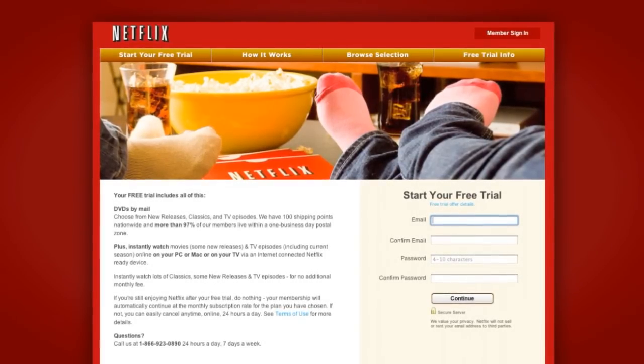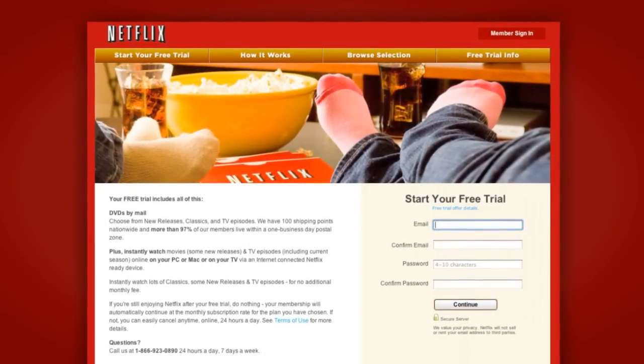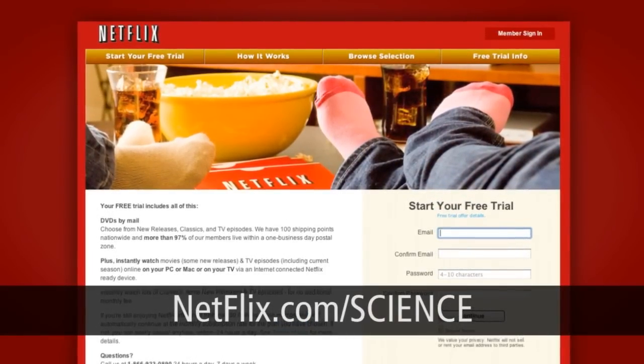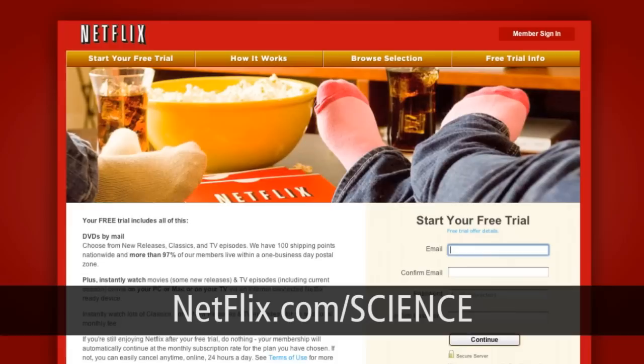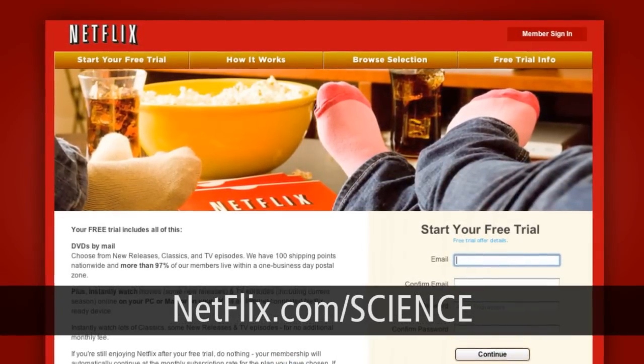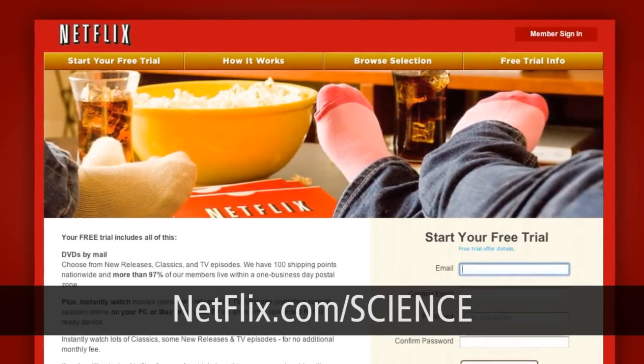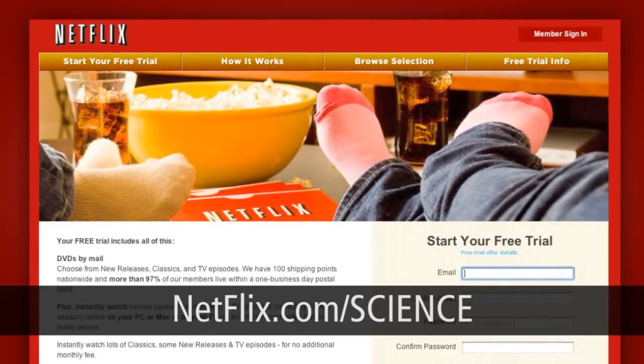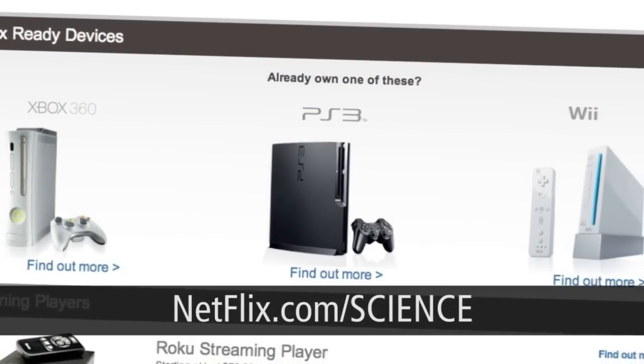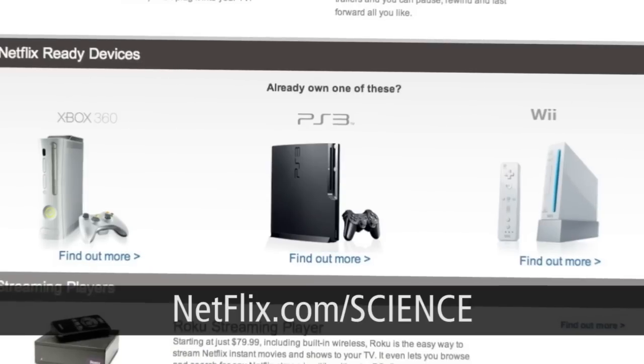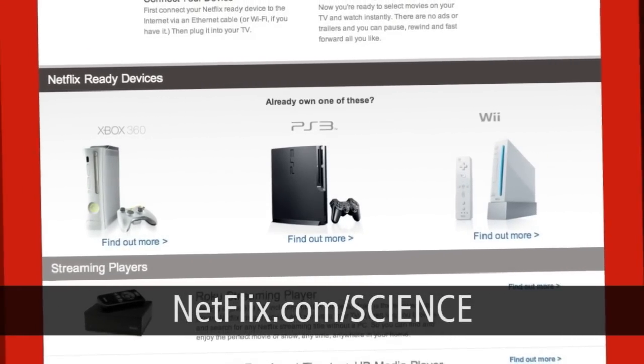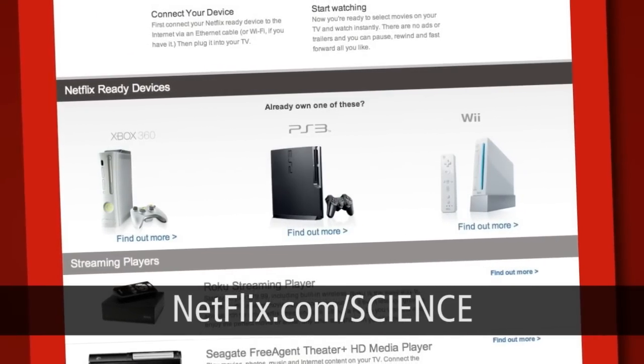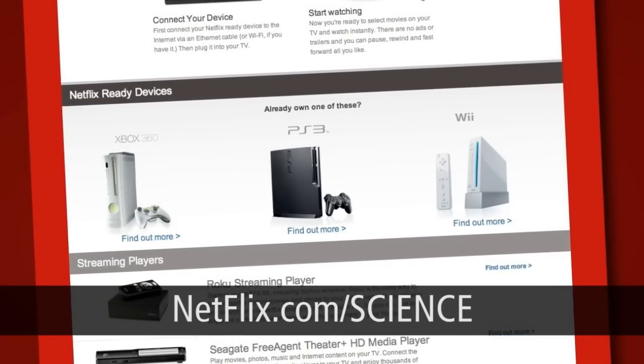I want to thank our sponsor this week, Netflix. Netflix has over 15 million members and it's the world's largest subscription service. It will instantly stream TV episodes, movies all over the internet, or they'll send you a DVD. Once you're a member, you can select from a huge library of titles that you can watch instantly. You don't need a computer to watch these. Among the many devices which work with Netflix are the Xbox 360, the PS3, even the Nintendo Wii. As a Scientific Tuesdays viewer, you can get a free trial membership right now. Just head over to netflix.com/science and sign up. Be sure to use that URL so they know I sent you.